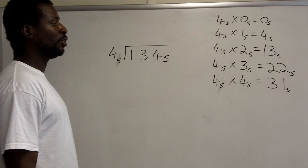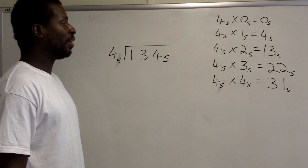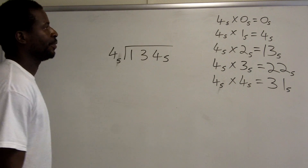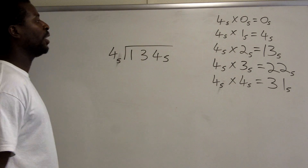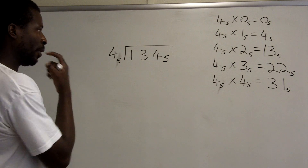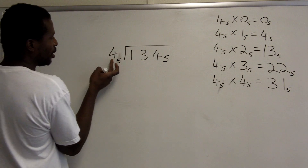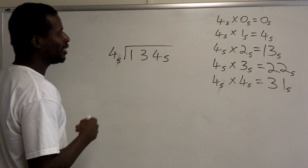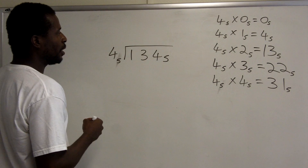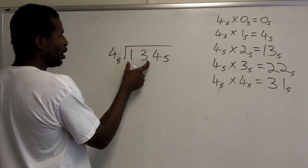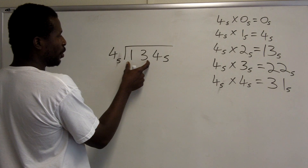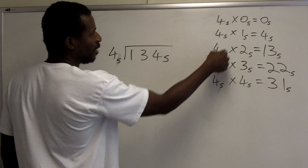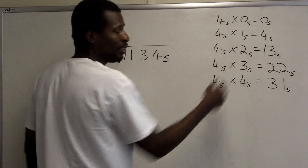That's all we need because the base is 5, so we cannot use the numeral 5 — the only numerals are 0, 1, 2, 3, and 4. So there is the multiplication table for base 5. Now we're going to start the division: how many times does 4 go into 1? 4 doesn't go into 1, so that leading 0 is unnecessary. Then how many times does 4 go into 13? Looking at the table, 4 base 5 times 2 base 5 is exactly 13 base 5.